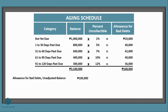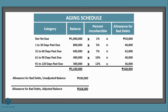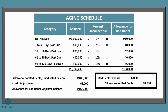According to our aging of accounts receivable, the balance should be 168,000 pesos at year-end. Since we need to increase the allowance for bad debts account — which has a normal credit balance — we should credit it by 68,000 pesos. The entry to record this is: debit bad debts expense 68,000 and credit allowance for bad debts 68,000.